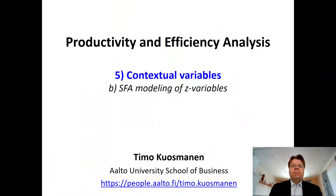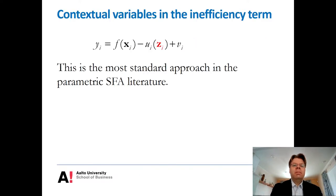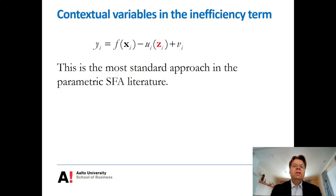In the second part of the fifth theme, we will look into the SFA modeling of the Z variables. As indicated in the previous lesson, the usual approach to model the contextual variables in the SFA literature is to put the Z variables into the inefficiency term — we assume that these Z variables influence the distribution of the inefficiency term.